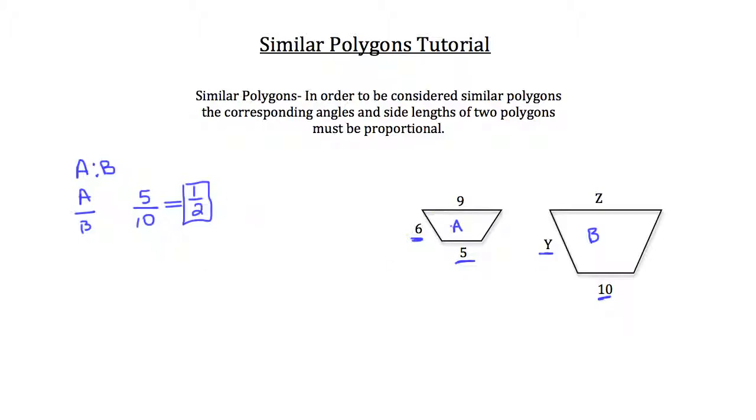We know that the leg of A is 6, and the leg of trapezoid B is Y. And we also know that they have a 1 to 2 proportion relating A to B. So, we can use the cross product property rule to multiply across the equal sign. So, 6 times 2 would be 12, and Y times 1 would be Y.